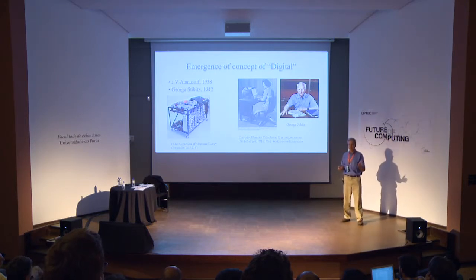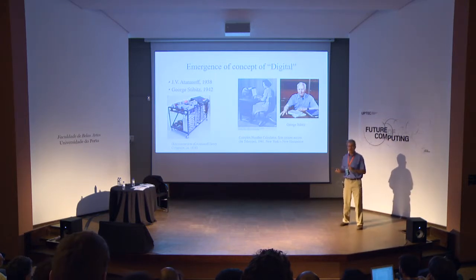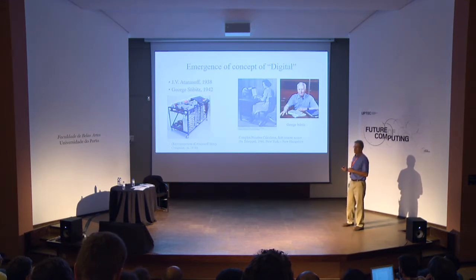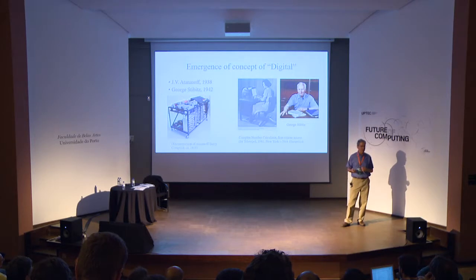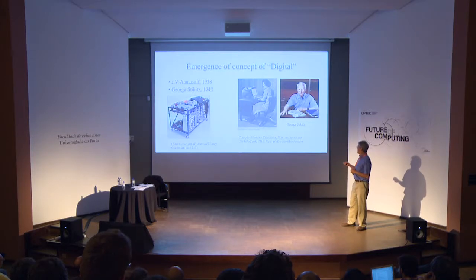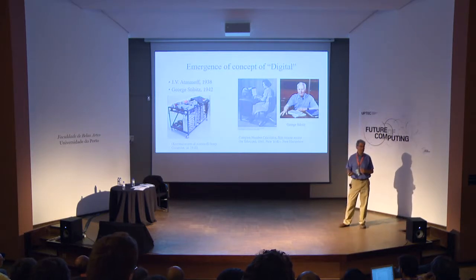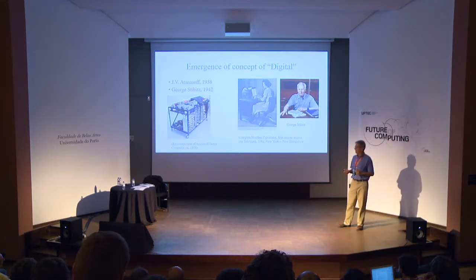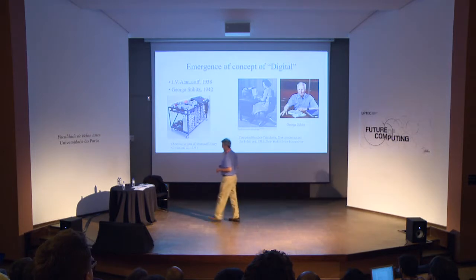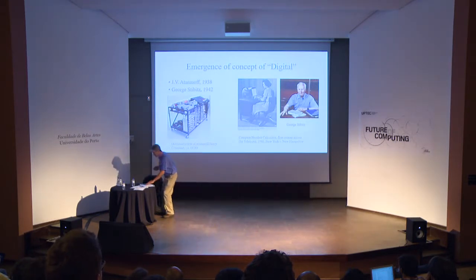Stibitz built a device at Bell Laboratories that calculated complex number arithmetic — addition and multiplication of complex numbers. He also demonstrated remote access to a computer in 1941 using a teletype located at Dartmouth College in New Hampshire, while the computer was at Bell Laboratories in lower Manhattan. That's the first example of remote computer access.